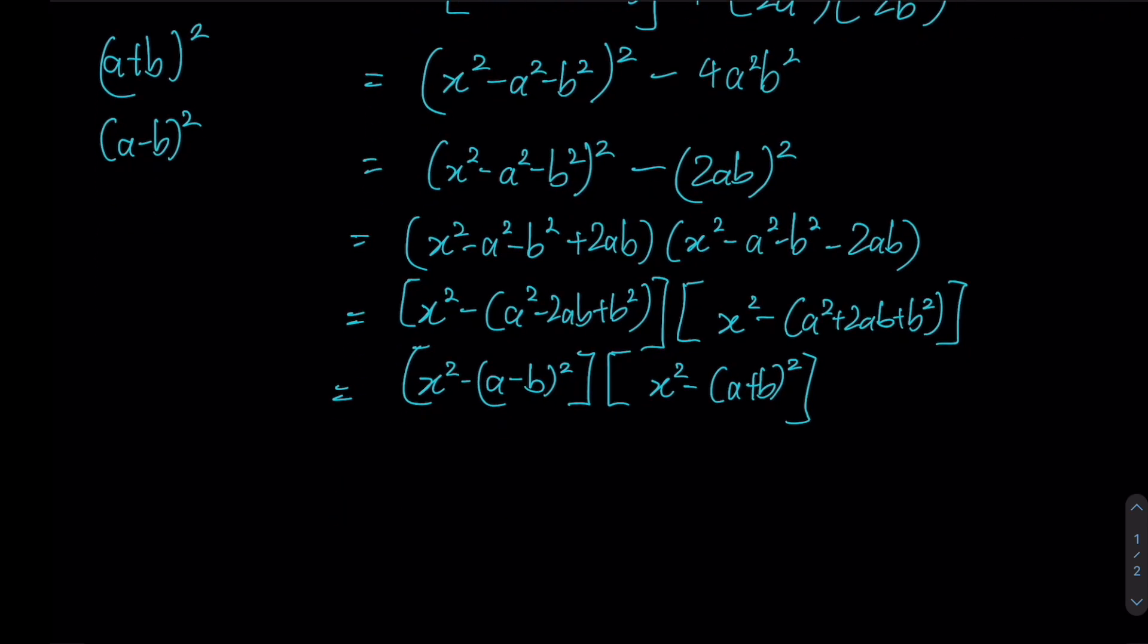And yet again, we can apply the difference of squares. This time, this is our a, this is our b, this is our a, and this is our b. So this is a plus b, a minus b, and then again, a plus b, and a minus b. And therefore, this right here will be our final answer since none of these four terms can be factorized any further.